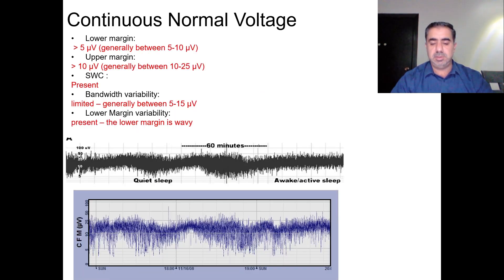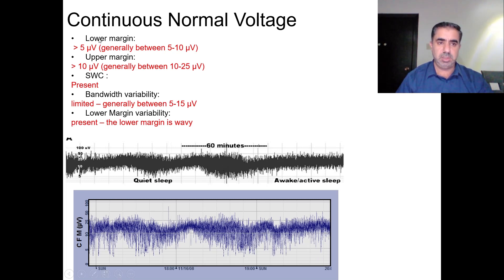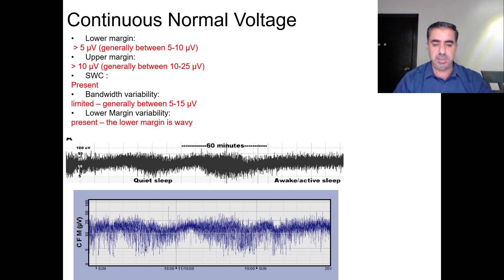We will start with the normal trace, the continuous normal voltage. When discussing each trace in detail, we look at five items: the lower margin, the upper margin, sleep-wake cycle, bandwidth variability, and lower margin variability. Try to remember the normal readings, because remembering normal will make you able to recognize abnormality. In the continuous normal voltage tracing, the lower margin is always above 5.